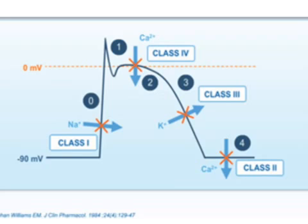Class 1A drugs block the fast Na+ channels, preferentially in the open or activated state — this is called state-dependent block. There is an increase in the action potential duration (APD) and effective refractory period (ERP). Class 1A drugs also block the potassium (K+) channel.